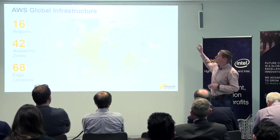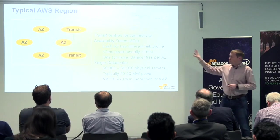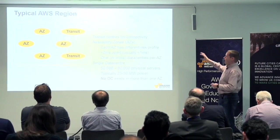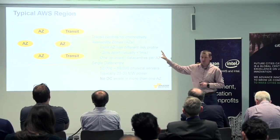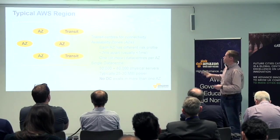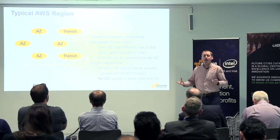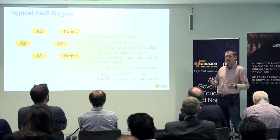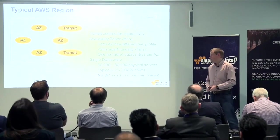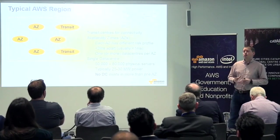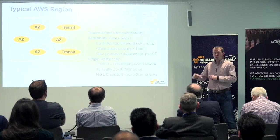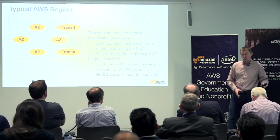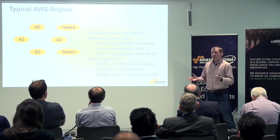The important thing I want to touch on is regions and availability zones. This is a representation of what a region looks like. In this region we have four availability zones and two transit centres. Transit centres are where we do our connectivity — this is how we connect to the internet, to our direct connect locations, and how we peer with our other regions and global internet providers. Each availability zone has a different risk profile. Within a region we'll have at least two availability zones, some as many as five. The UK region currently has two.